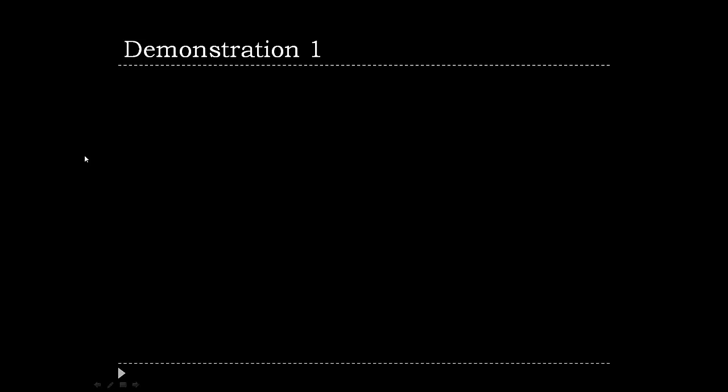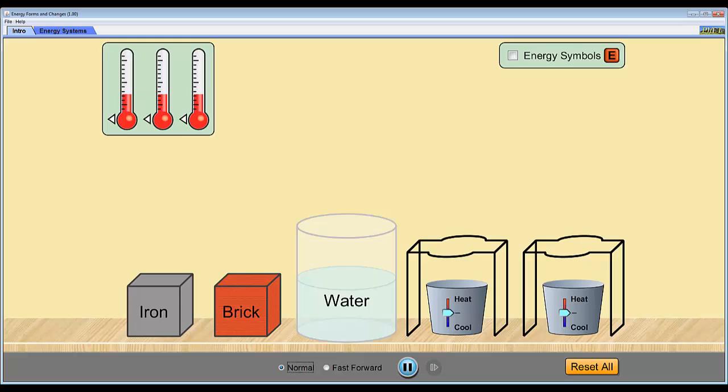So the first thing that we'll do is we'll go over a demonstration of these concepts using a simulation. All right, in this demonstration we have a number of objects: a block of iron, a block of brick, a cup of water and we have two heating elements over here.